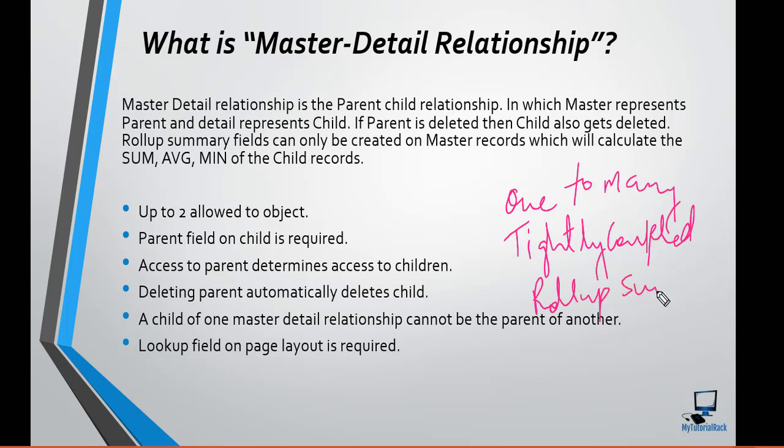The rollup summary field is only available in the case of master-detail relationship, and it is available on the parent object. You cannot create this rollup summary for a lookup relationship — this field is not available for lookup relationships. The rollup summary field is only available in master-detail relationship and can only be created on the parent object, or master record. It is used to calculate the sum, average, or minimum of the child records.